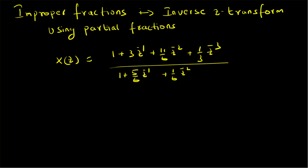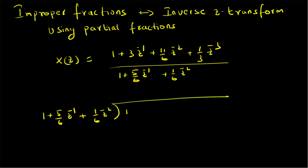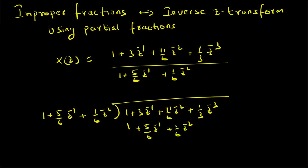The divisor is 1 plus (5/6)z⁻¹ plus (1/6)z⁻², and the dividend or numerator is 1 plus 3z⁻¹ plus (11/6)z⁻² plus (1/3)z⁻³. The first term in the quotient will be 1, so that we can cancel the constant, and then we subtract 1 times the divisor. The difference gives us (13/6)z⁻¹ — since 3 minus 5/6 is 18/6 minus 5/6 — giving 13/6.